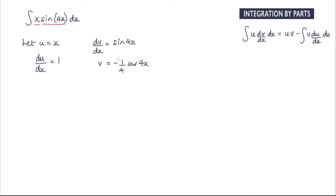So now what I want to do is plug these in to this rule over here. We've got the integral of x sine of 4x with respect to x is equal to u multiplied by v.